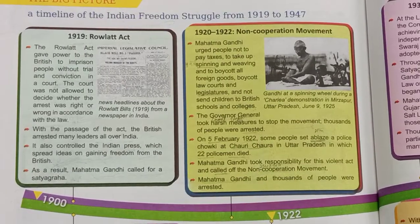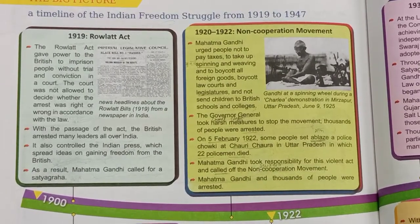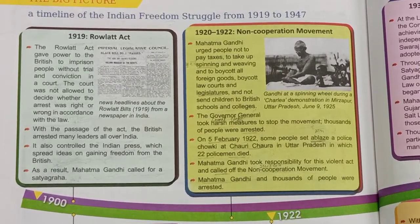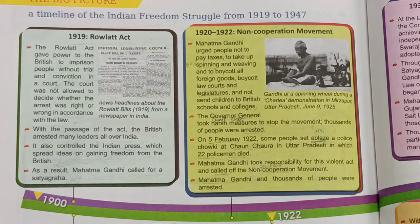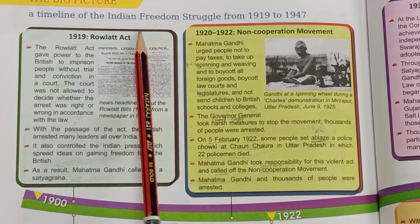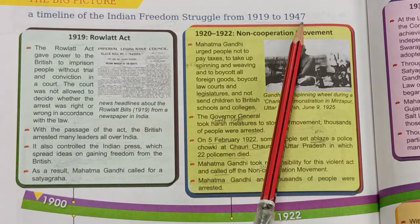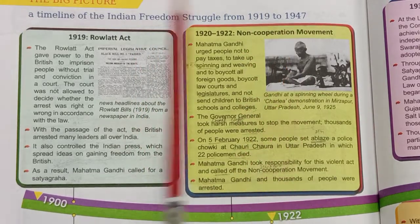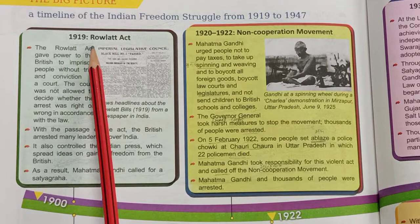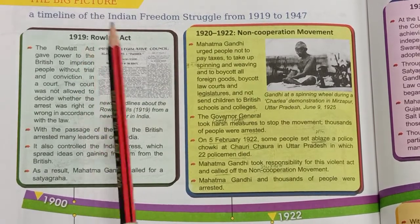Good morning students, welcome to Pioneer Convent School. As our chapter is going on, Indian Freedom Struggle 2. Today we will study about a timeline of the Indian Freedom Struggle from 1919 to 1947 — what events, what movements happened, and how we got freedom.